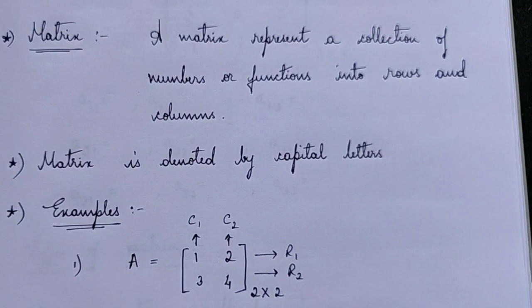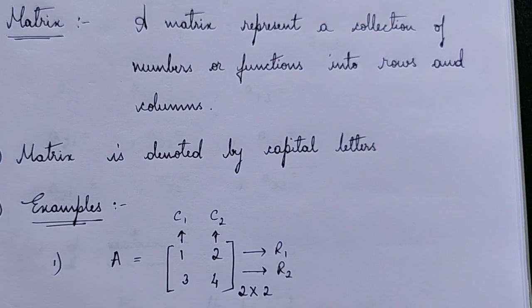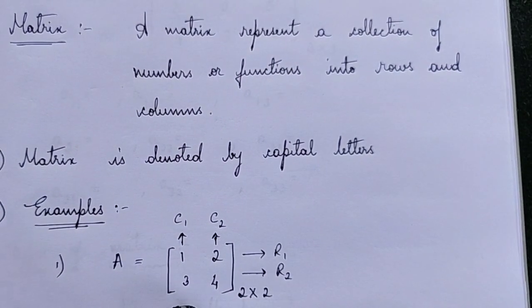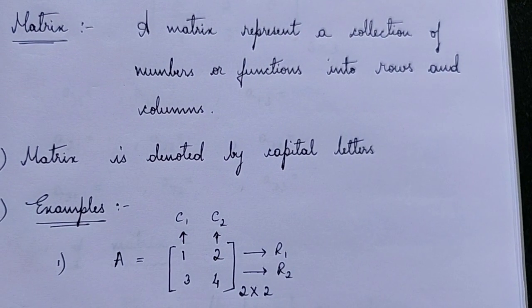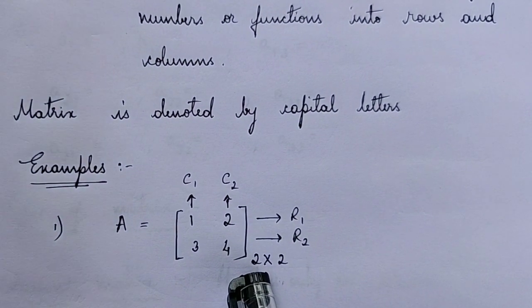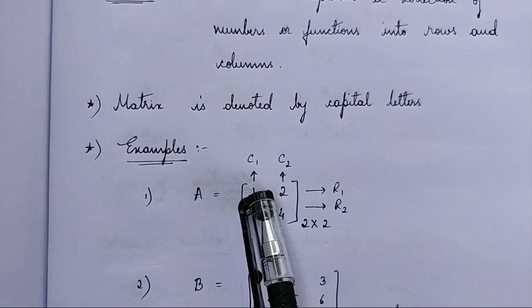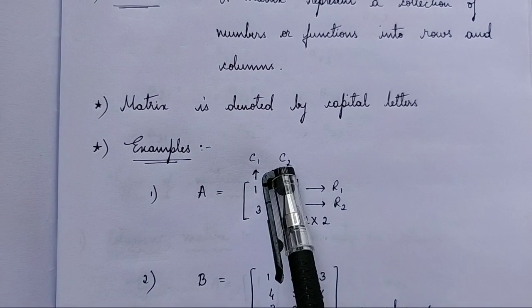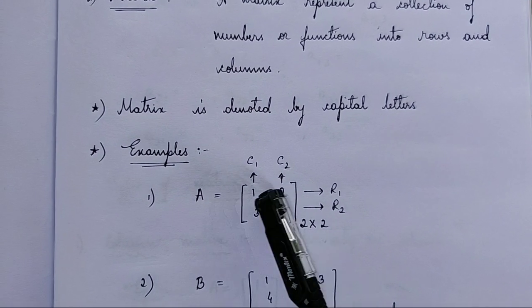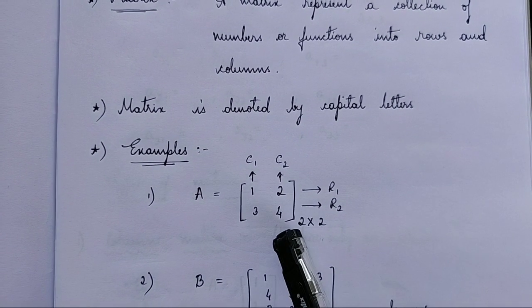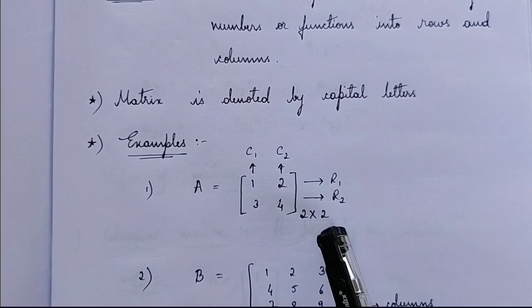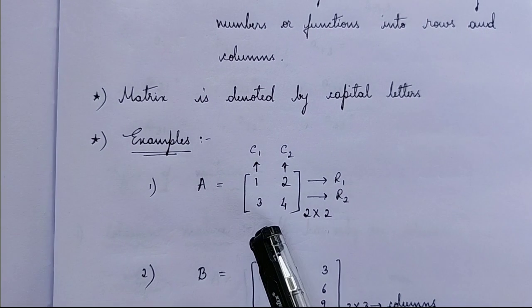We have something called the order of a matrix. The entries inside a matrix are called elements or entries. Order is nothing but the number of rows cross the number of columns. So how many rows do you have here? 1 and 2 — so 2 rows cross 2 columns. So 2 cross 2 is the order of this matrix.